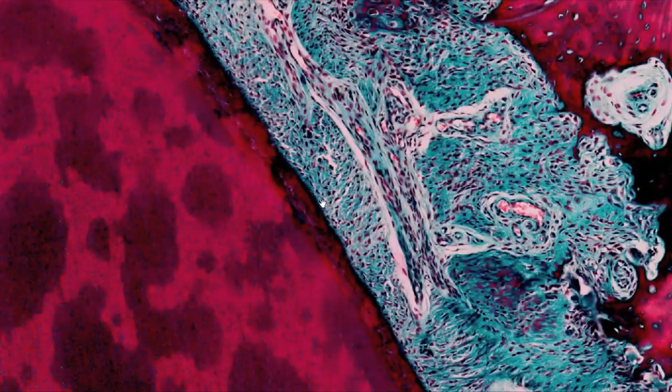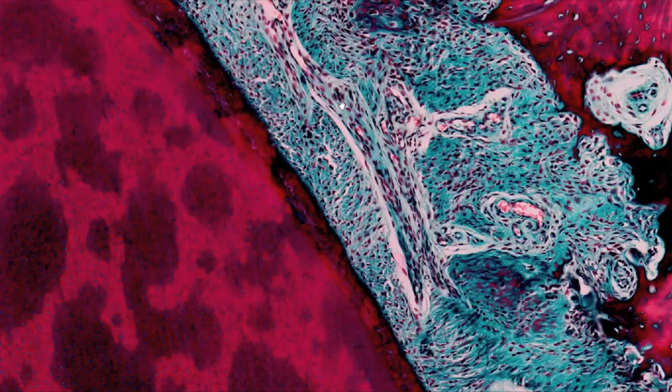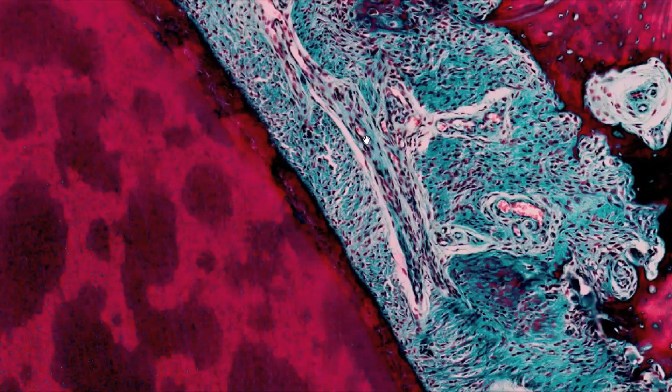Since the collagen fibers stain blue in Mallory's method, both the periodontium and the pulp are blue, indicating a high proportion of these fibers, especially in the periodontium.